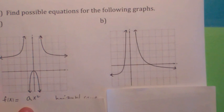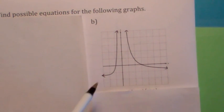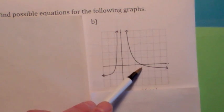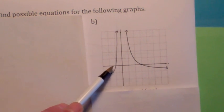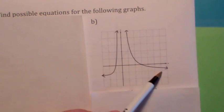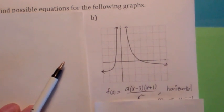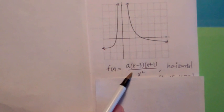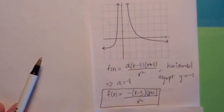This one looks like a vertical asymptote of even multiplicity — maybe an x squared on the bottom. And then we're going to have x-intercepts at 3 and negative 1, so maybe an x minus 3 on the top and x plus 1 on the top. It looks like we may have to have a horizontal asymptote of negative 1. So I'm thinking a times x minus 3 times x plus 1 over x squared. For the horizontal asymptote to match negative 1, a would have to be negative 1. So that looks like a possibility.